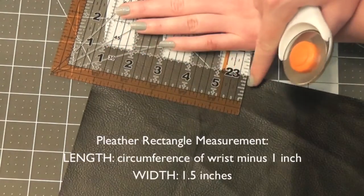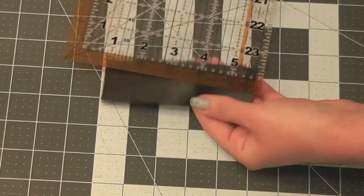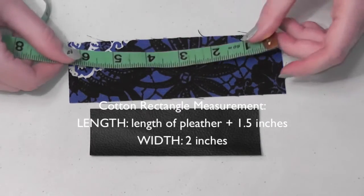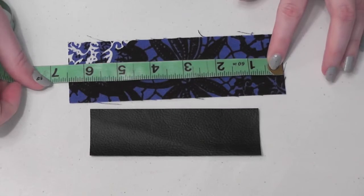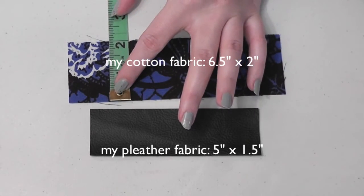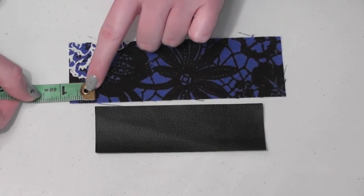Cut out a rectangle from your pleather that measures the number you just came up with long by one and a half inches wide. Now cut out a piece of decorative cotton fabric that's an inch and a half longer than the pleather and two inches wide. Since my pleather measures five inches long, my cotton piece is six and a half inches long. Basically these two sides of the cotton fabric will be three quarters of an inch longer than the pleather.